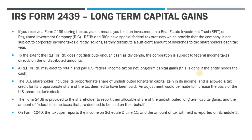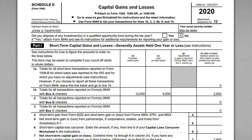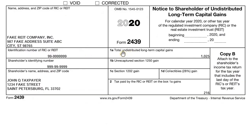If the REIT or RIC elects to do this, the shareholder includes their proportionate share of the undistributed gain in income and is allowed to take a tax credit for whatever was paid at the corporate level. The REIT or RIC files its 1120, reports the long-term capital gain, and pays tax on it — but doesn't actually distribute anything to the shareholder. The shareholder records their proportionate share of the gain and gets credit for tax paid at the entity level. On the 1040, the taxpayer reports the income and the tax withheld to receive that credit.